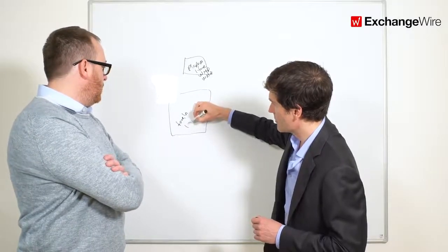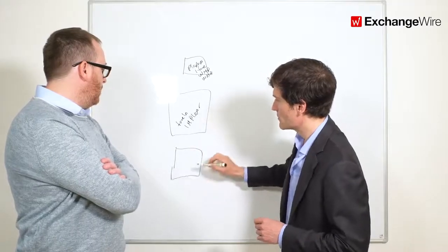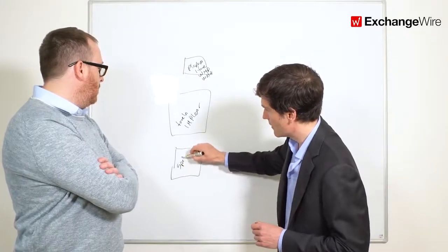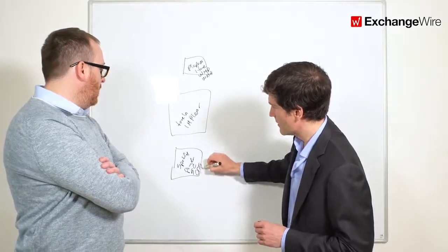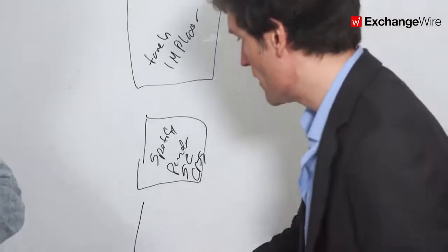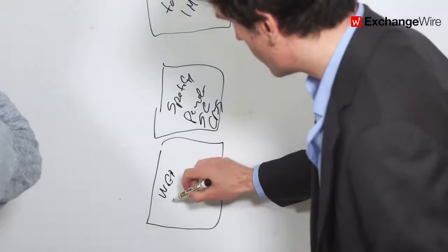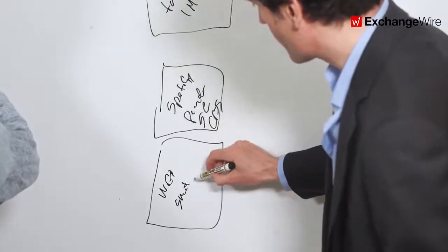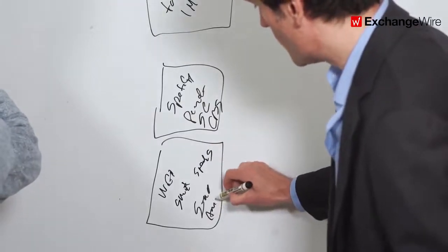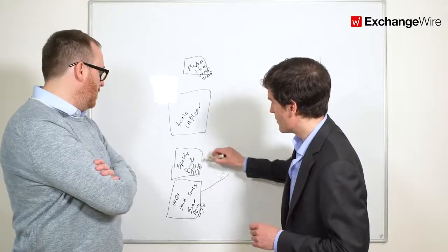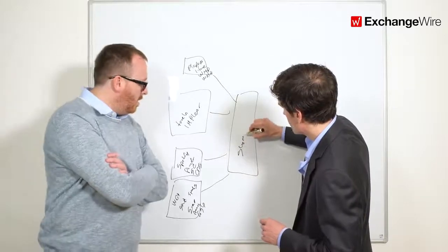TuneIn, iHeart Player, and all of those. Then you have players like those controlled by the publisher, like Spotify, Pandora, SoundCloud, CBS. They have their own player. Yeah. And then lastly, you have a set of, I would say, either Wi-Fi or smart speakers. So whether it's Sonos, Amazon, Google, so all of those. So all of this is connected to a streaming infrastructure.